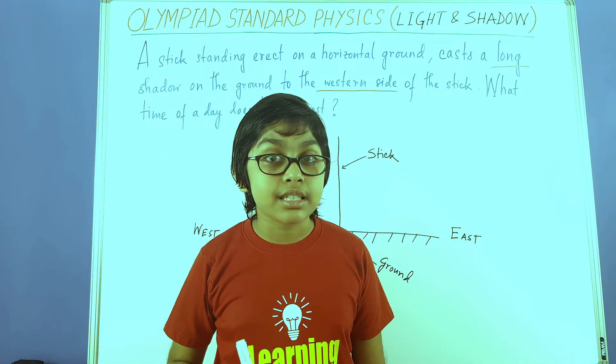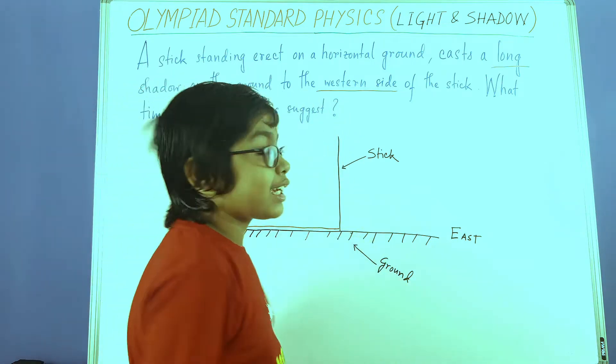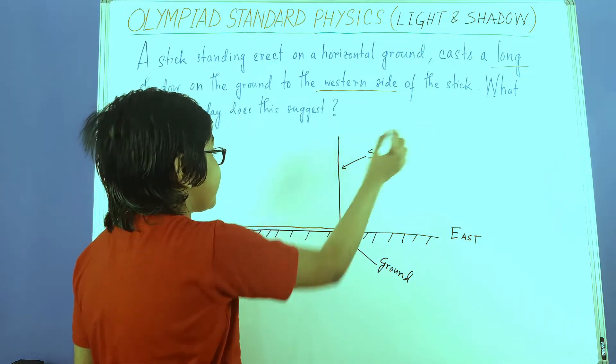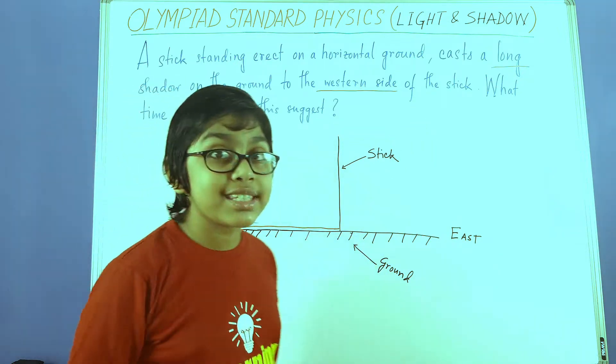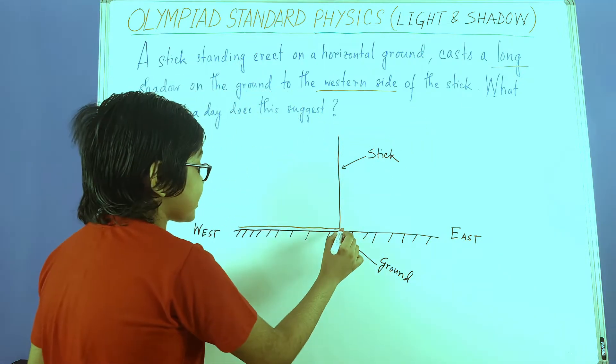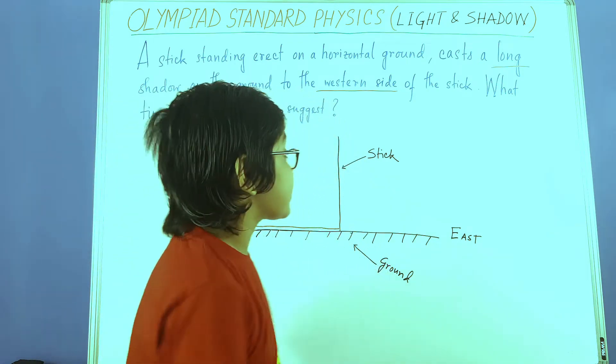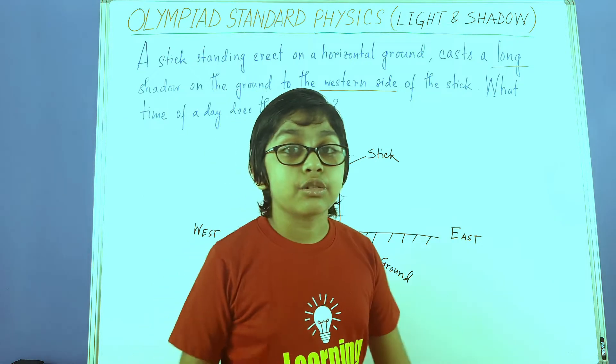First thing, you need to think about the position of the light source. As per the question, the shadow is on the western side. As you can see, we are assuming this red line to be the shadow of the stick. And since it's on the western side, obviously the light source must be somewhere in this side.